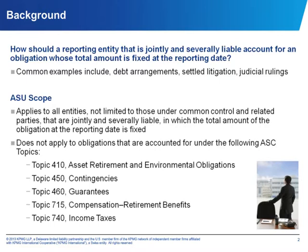Some common examples where we see joint and several liabilities are debt arrangements, sudden litigation, and judicial rulings. The ASU is applicable to all entities and is not limited to those under common control and related parties, even though these are primarily where you find arrangements with joint and several liability. In addition, for obligations where specific guidance already exists under US GAAP, such as contingencies, environmental remediation, and tax liabilities, you would continue to account for those under the existing standards, and they are excluded from the scope of this ASU.